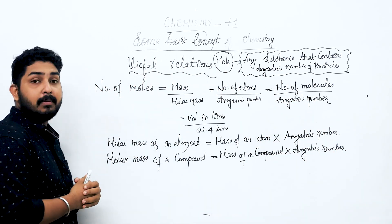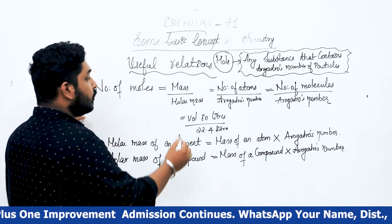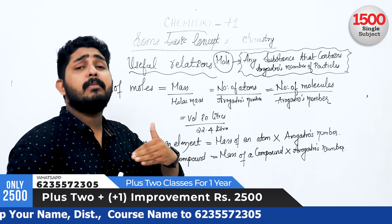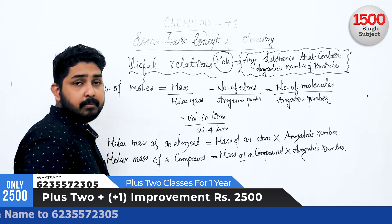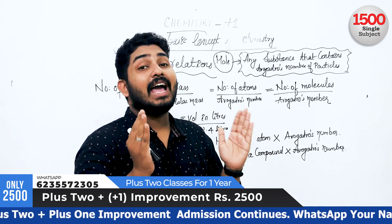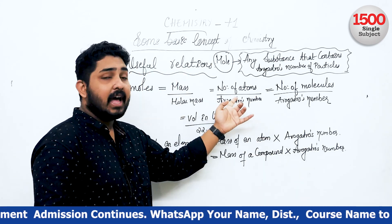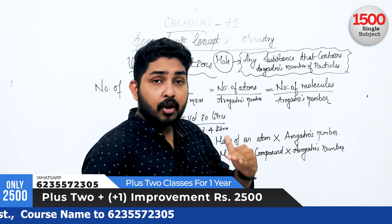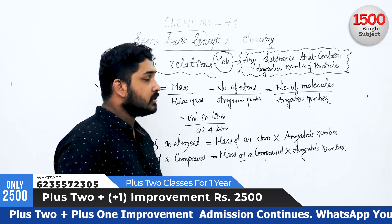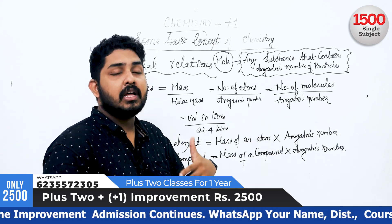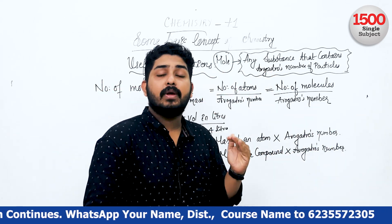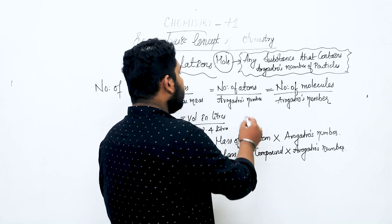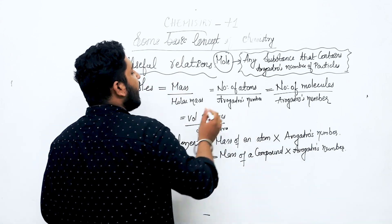Important relations: Number of moles is equal to mass divided by molar mass — that is given mass divided by molar mass. Number of atoms divided by Avogadro's number gives moles. Number of molecules divided by Avogadro's number also gives number of moles.